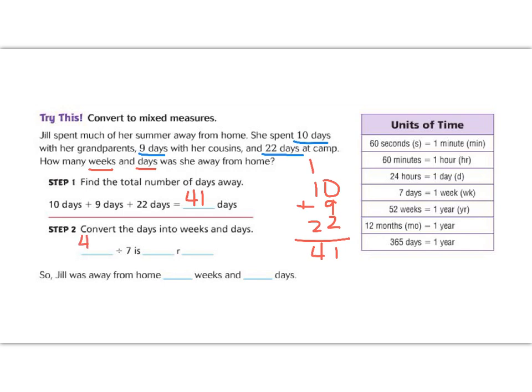Now we need to know how many weeks 41 days is. So we're going to do 41 divided by 7, because that's how many days are in a week. Well, I know that 7 times 6 is 42. So it must be 7 times 5, which is 35. And then let's subtract to see what's left over. 1 minus 5 we can't do. So 11 minus 5 is 6. So that means that she was gone for 5 whole weeks and 6 days. So Jill was away from home for 5 weeks and 6 days. Almost 6 whole weeks, but not quite. Great job. Let's keep going.